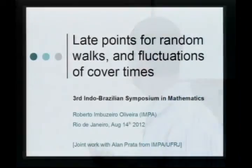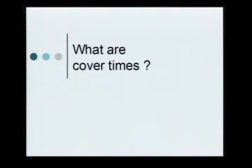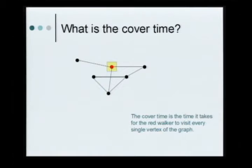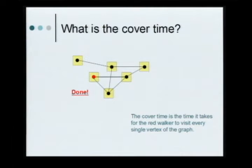I'm going to start the talk by explaining, or maybe reminding you, of what the cover time is. So, what is the cover time? Here I have a random walk on a graph, and this is the starting position. The cover time is the time it takes for the random walk to visit all vertices in the graph. It doesn't need to be a graph — it could be any Markov chain on a finite state space. This number of steps until it covers everything is what we call the cover time.